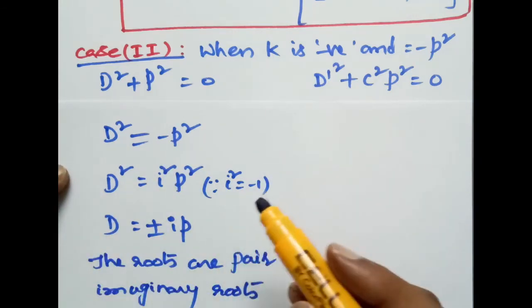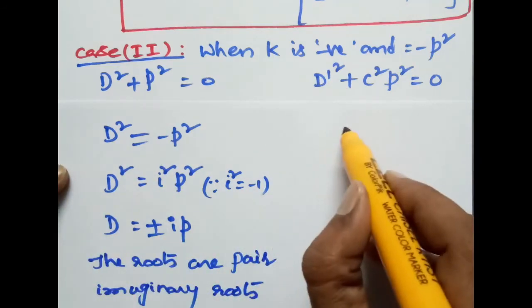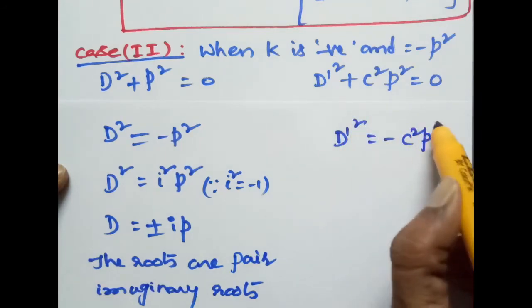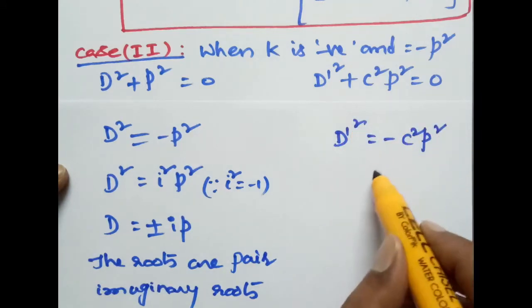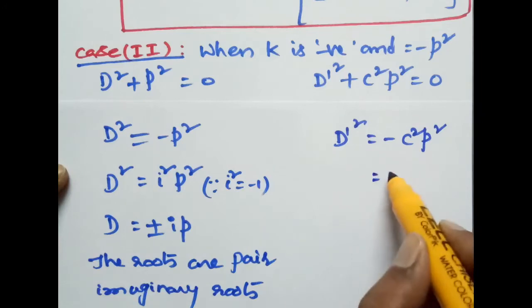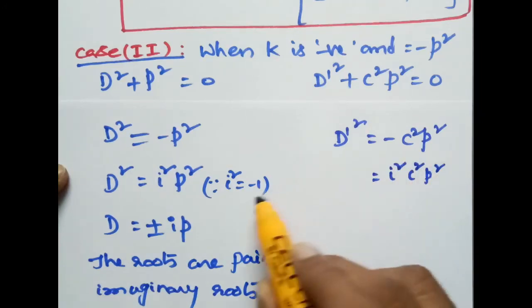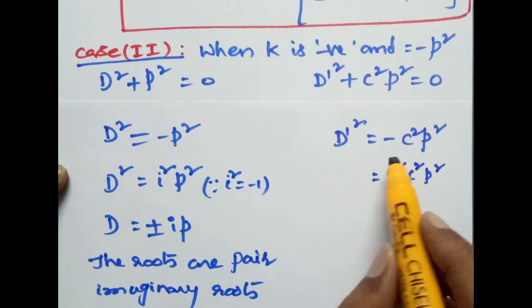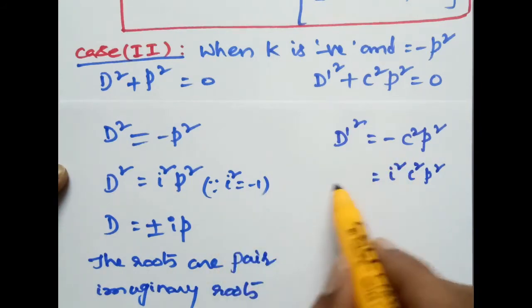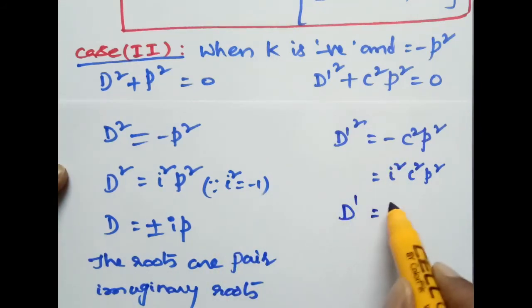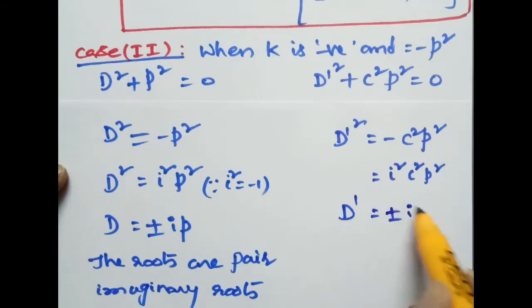Similarly, D'² - c²k = 0 becomes D'² = -c²p² = i²c²p², so D' = ±icp. The roots are also complex.